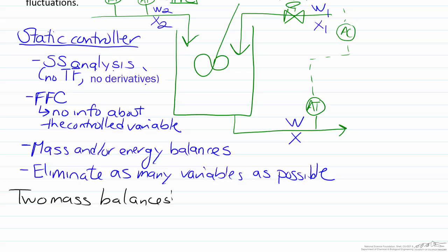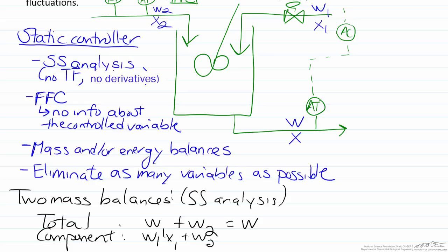The total mass balance, since we're doing steady state analysis, will just be W1 plus W2 equals W. Related, we'll have a component balance of W1 X1 plus W2 X2 equals WX. Where X here, since W is a mass flow rate, X, X1 and X2 are mass fractions.